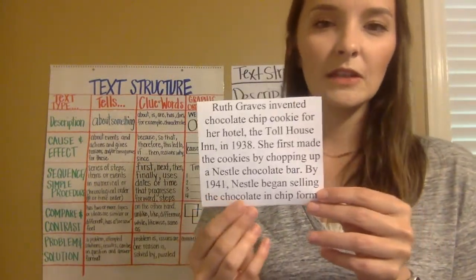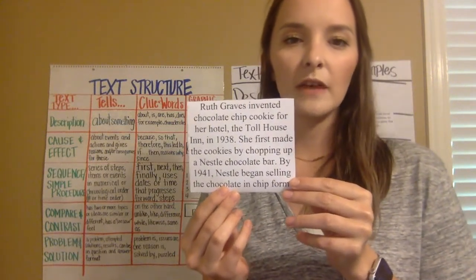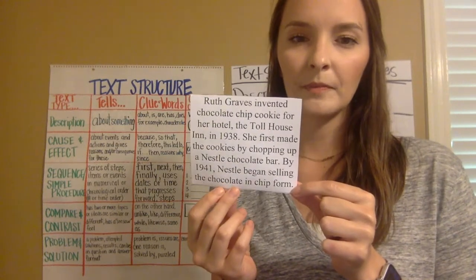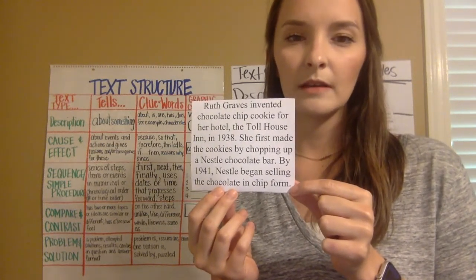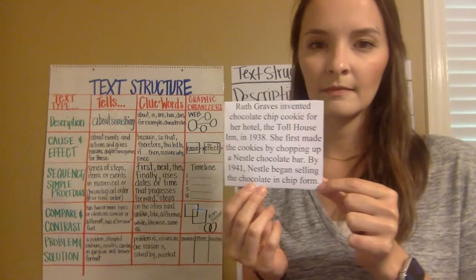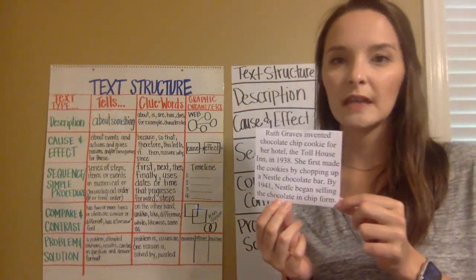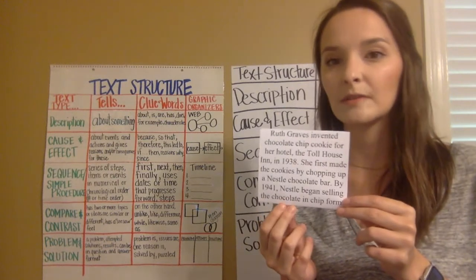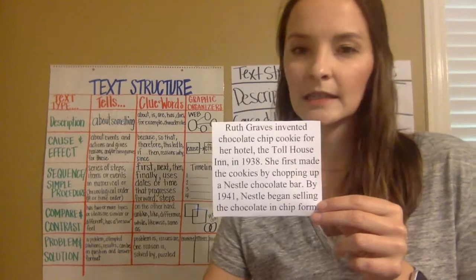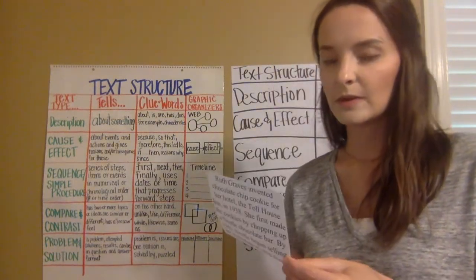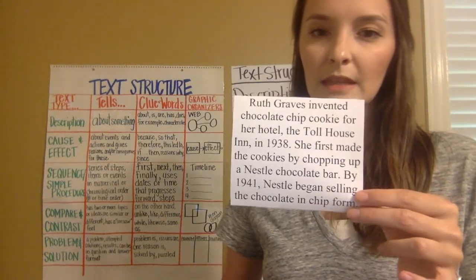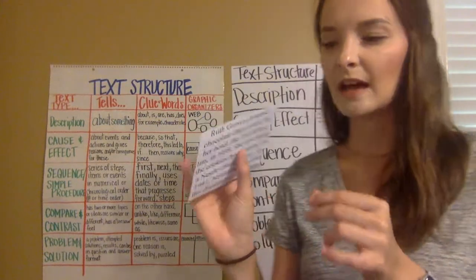Next card: Ruth Graves invented chocolate chip cookies for her hotel, the Toll House Inn, in 1938. She first made the cookies by chopping up a Nestlé chocolate bar, and in 1941 Nestlé began selling the chocolate chip form. When we talk about what year something happened, that's sequence — it starts in 1938, then 1941, progressing and happening over time.